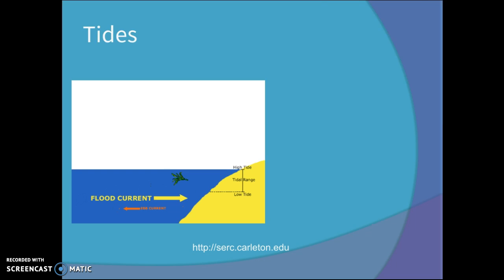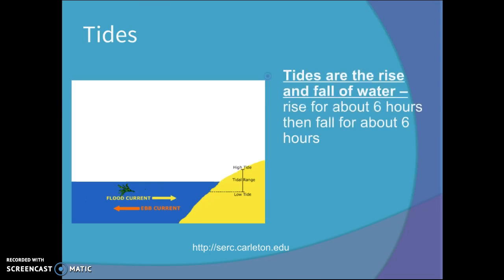We're going to start off by defining what tides actually are. Tides are the rise and fall of water. They rise for about six hours and then fall for about six hours and they do this throughout the day in this cycle.